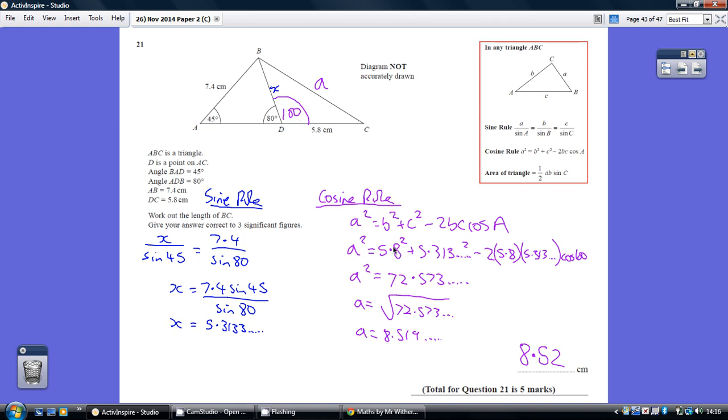So A squared is 72.573. Square rooting A is 8.519 dot dot dot, so to three significant figures, that's 8.52.